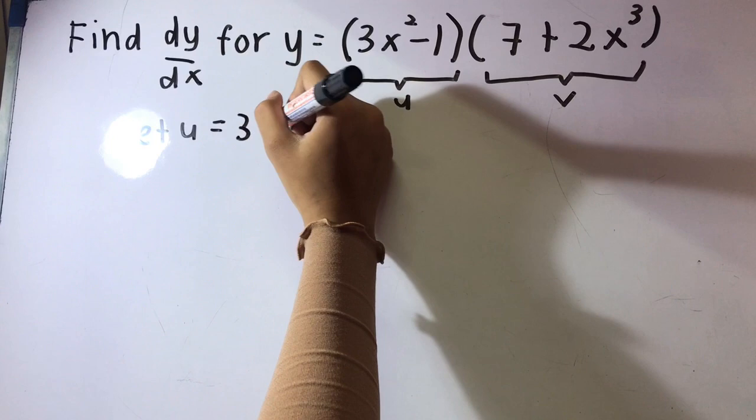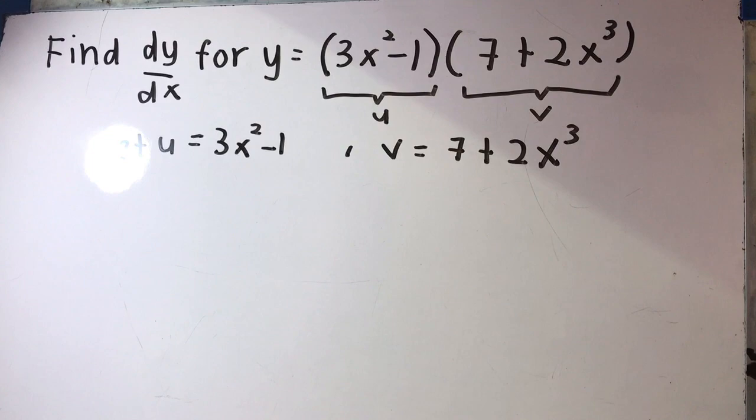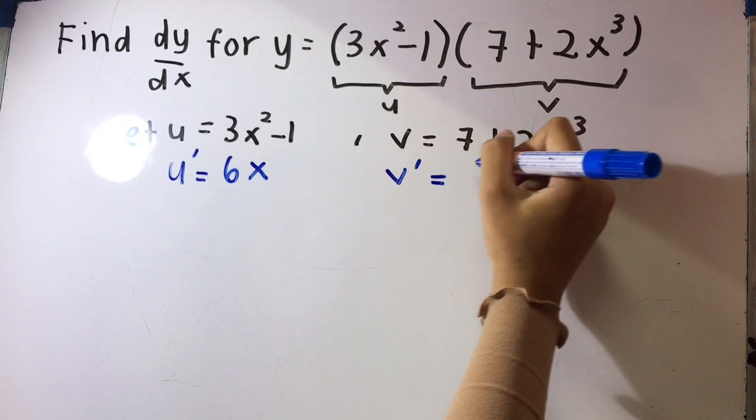equal 3x² - 1, while v is 7 + 2x³. Then we differentiate u and v. u' is 6x, while v' is 6x³.